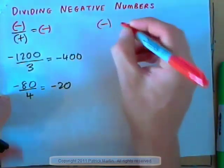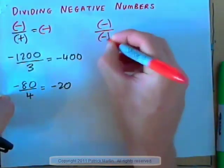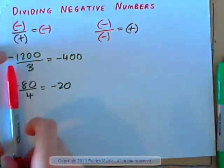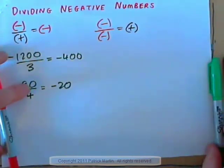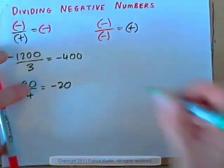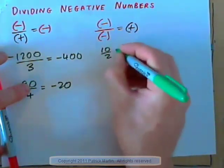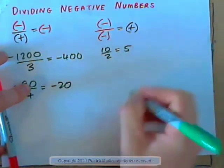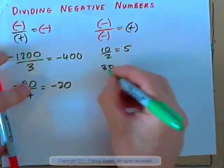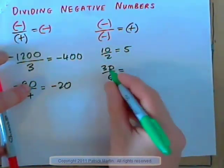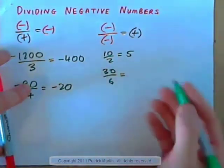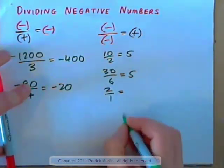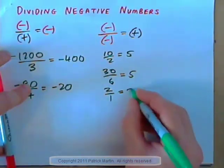This interesting one: negative divided by negative is actually equal to a positive number. Let's have a look at this. First of all, let's understand this. 10 divided by 2 — this is a positive over a positive. How many 2's are in 10? Five 2's in 10. 30 divided by 6: how many 6's are contained in 30? There are 5 of them. 2 over 1: how many 1's are in 2? There are 2 ones in 2.